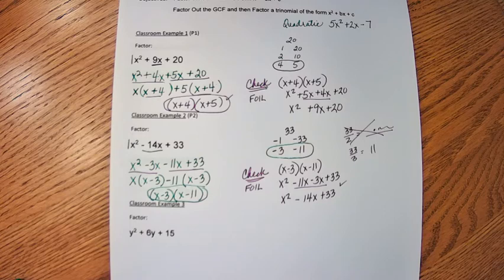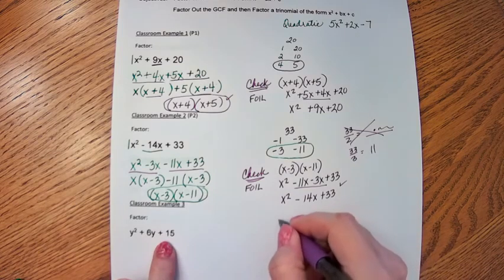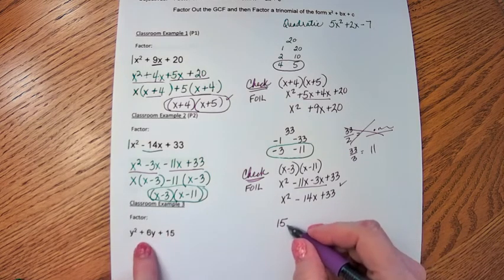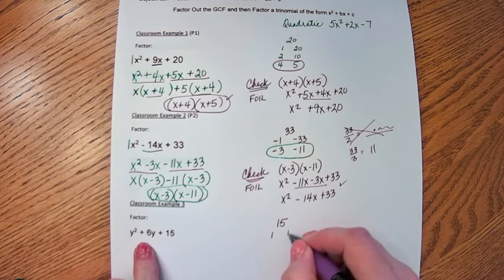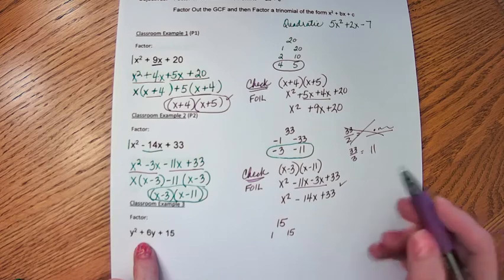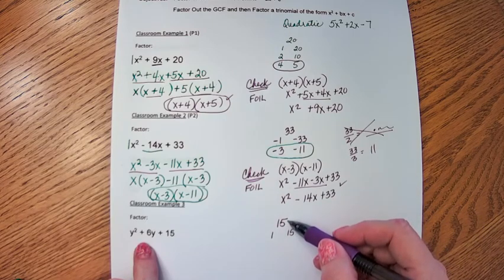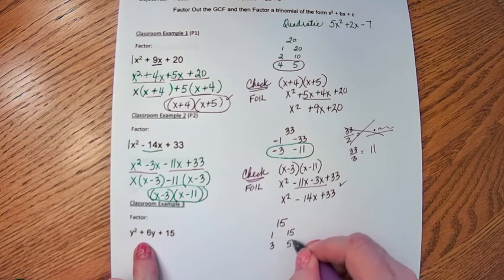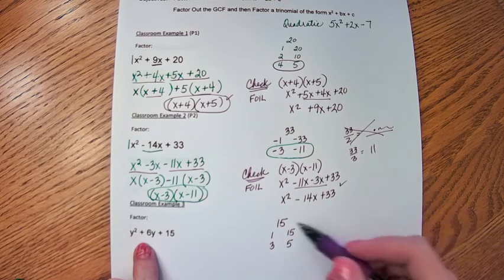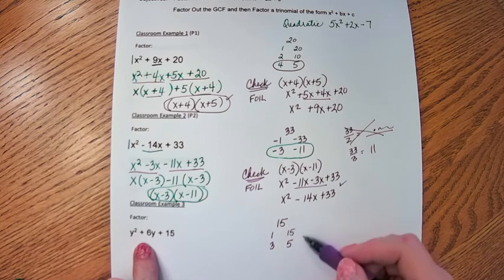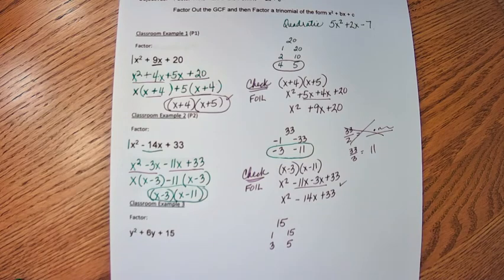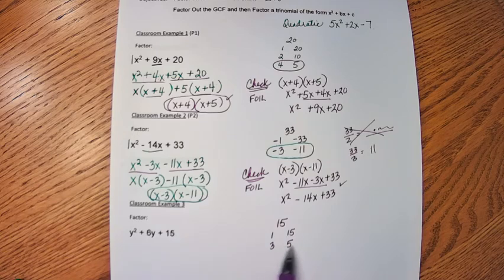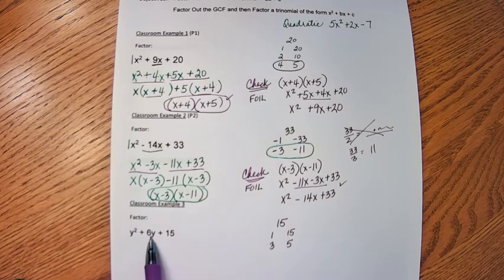Alright, and for classroom example 3 here, the variable is named y, but that's okay. On the side here, we're going to find the factors of 15 that add up to 6. 1 times 15, they don't add up to 6. 2 doesn't go into 15 evenly. 3 times 5, they don't add up to 6. 4 does not go into 15 evenly. And I already have the 5. So I can stop finding my factors of 15. There are no two numbers that multiply together that give me 15 that when they're added together give me 6.